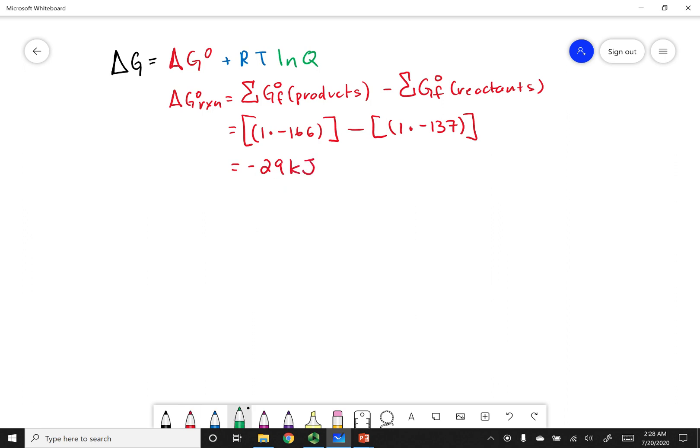All right, let's go ahead and evaluate Q. So Q is going to be products over reactants raised to their stoichiometric coefficients. So my product is a liquid, and remember, liquids and solids get one. On my reactant side, I have the pressure of carbon monoxide times the pressure of H2. Now since hydrogen has a coefficient of two, I have to square that pressure. So this is going to be equal 1 over 5 ATMs times 3 ATMs squared. This gets me 0.0222.